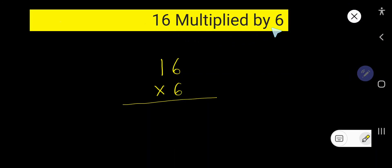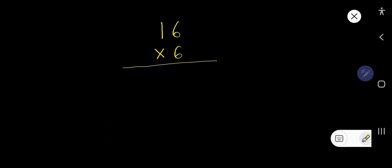16 multiplied by 6. So 16 times 6, how to do that? 6 times 6 equal to 36. If you forget 6 times 6 equal to 36, how can you find out that? So here is the way.